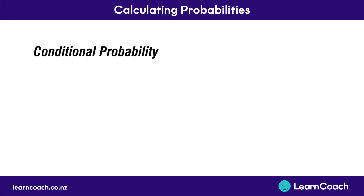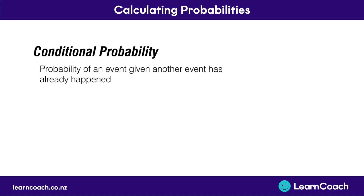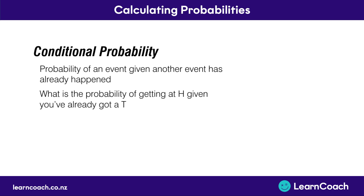Now if we look at conditional probability, we know this is the probability of an event given another event has already happened. So what is the probability of getting a head, given you've already got a tail?